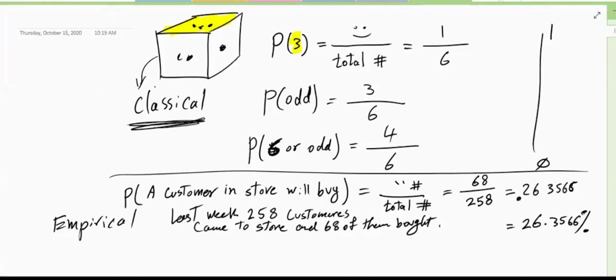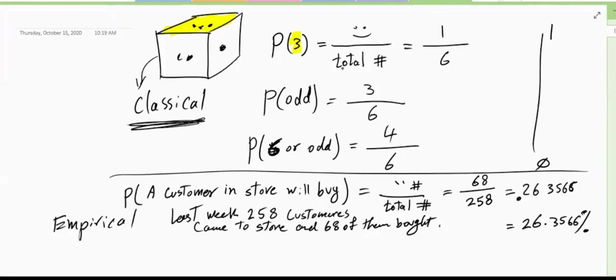We have two types of probability. But in both kinds, we have to do counting — counting the total number of ways things can happen, and the total number of ways we can be happy. The first part of Chapter 4 focuses on counting, because without being able to count, we won't be able to answer probability questions.